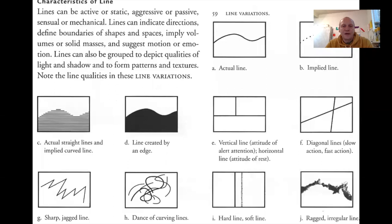There are different kinds of lines: actual line, implied line, straight lines and implied lines on C, and the abutting edges of shapes in D. There are also vertical lines, diagonal lines, jagged lines, curving lines, hard lines, soft lines, and ragged, irregular lines.